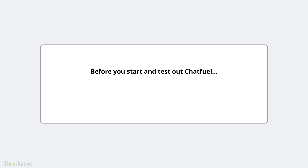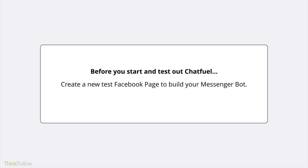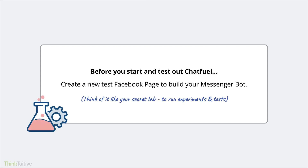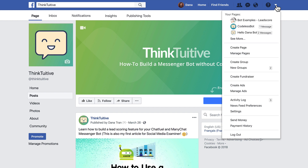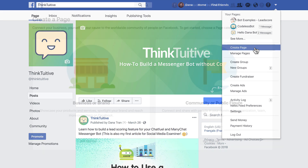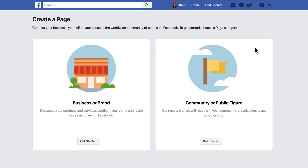Before you start and test out Chatfuel, I do recommend creating a new Facebook page to build your Messenger bot. Think of it like your secret lab to run experiments and tests. To do this, go to Facebook, click on the Settings drop-down menu in the top right-hand corner, and click on Create a New Facebook Page, then follow the on-screen instructions.